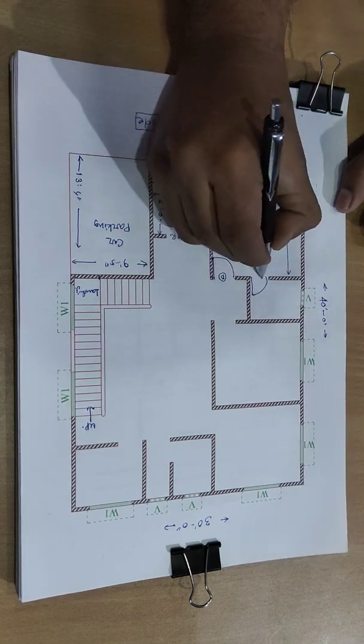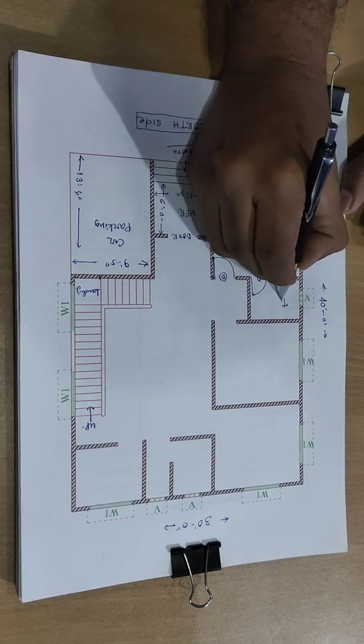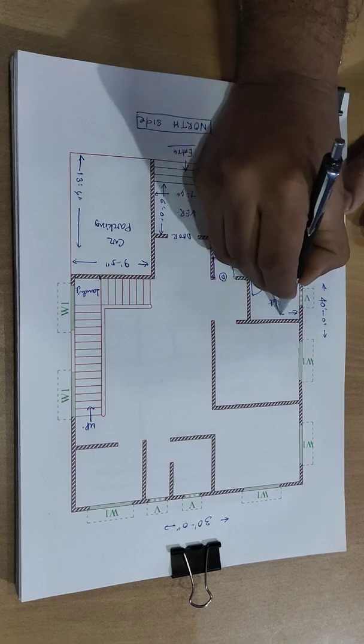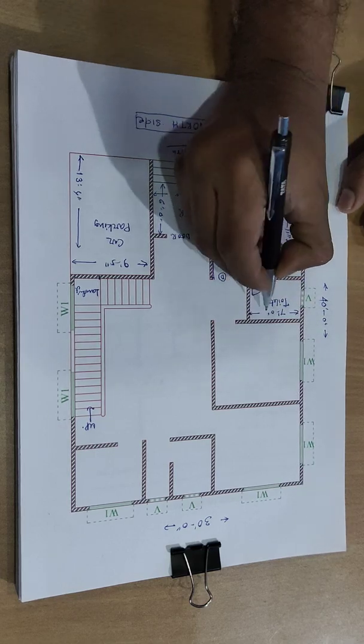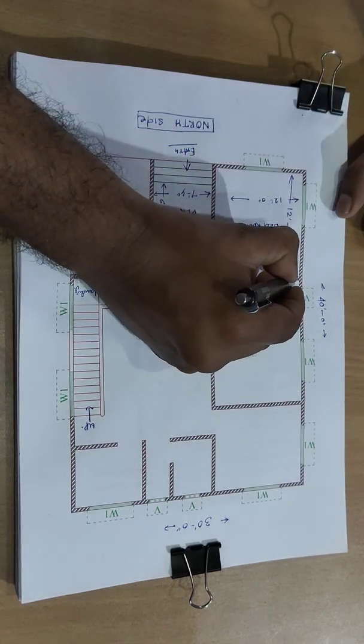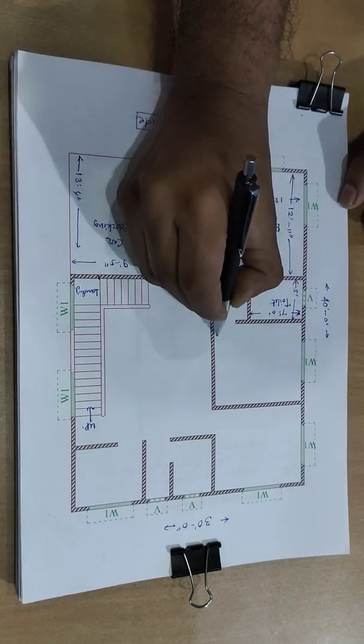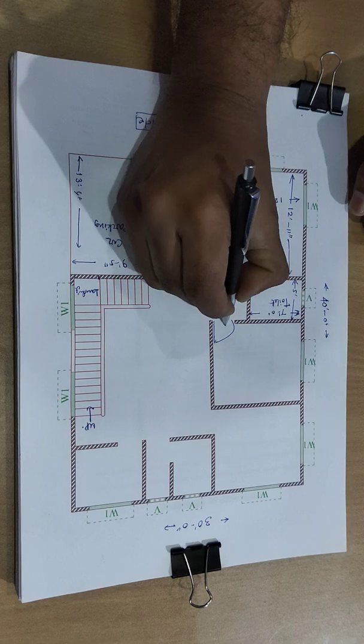An attached toilet. Toilet. Direction 7 feet, this direction 5 feet. And door.